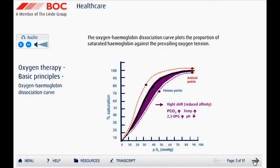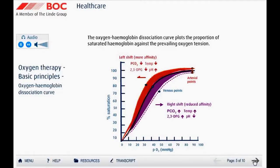A left shift indicates that hemoglobin has an increased affinity for oxygen, so that hemoglobin binds oxygen more easily. A decrease in carbon dioxide, temperature, and diphosphoglycerate, and an increase in pH (alkalosis), will cause a shift to the left.